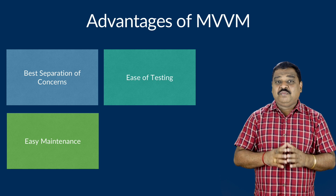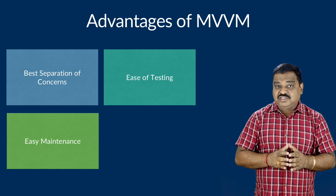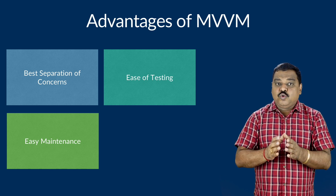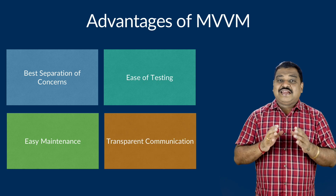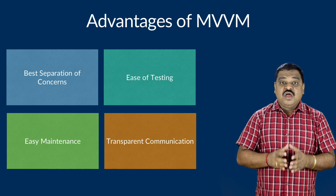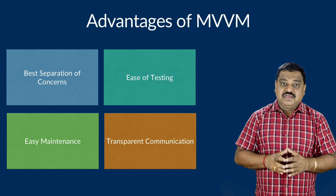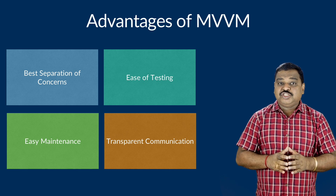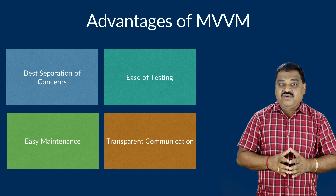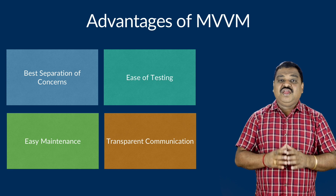Third, easy maintenance: the separation between different parts of the application brings structure and uniformity to the code, making it easy to know where things should go or where they are likely to be. Fourth, transparent communication: the ViewModel provides a transparent interface to the view, which it uses to populate the view layer and interact with the model layer, resulting in transparent communication between the different layers of the application.